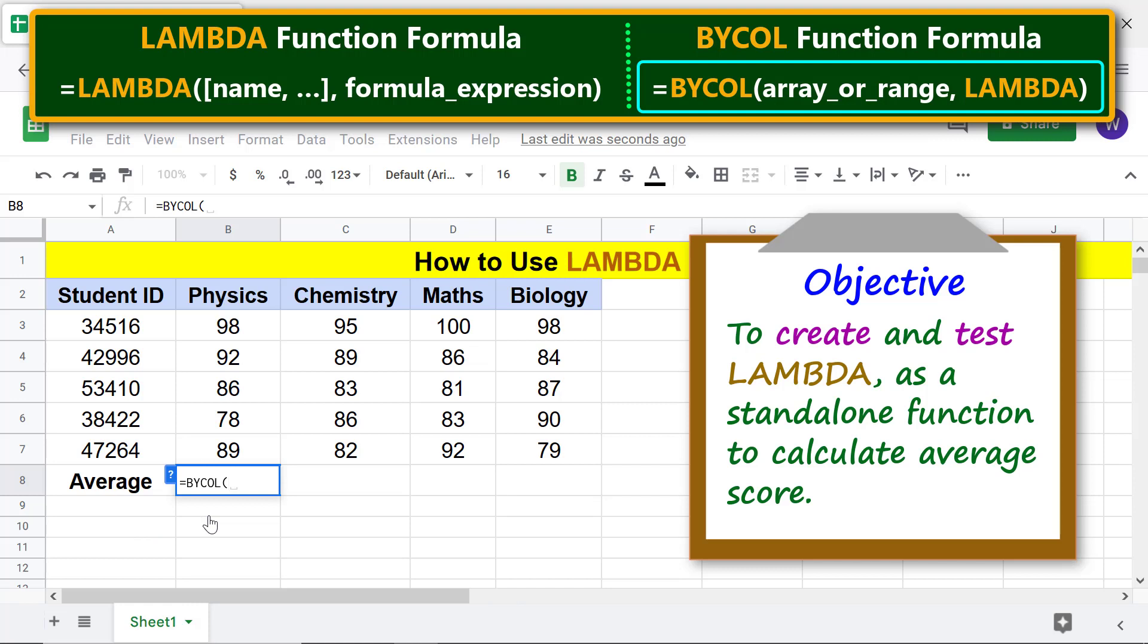For array or range, specify this range because we want the average score of each of the four subjects. Type comma. For LAMBDA, paste the LAMBDA function we copied earlier by pressing the Control and V keys. Type the closing parenthesis and press enter.